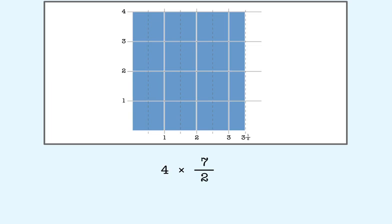And our multiplication problem becomes 4 times 7 halves. We know that when we multiply, the answer is 28 halves. We can rewrite this as the whole number 14. You can see that the answer, 14, is greater than 4.